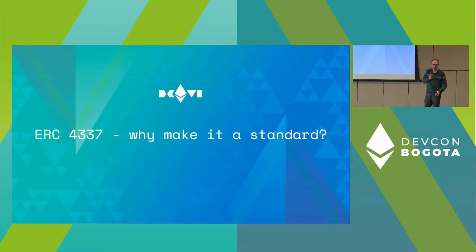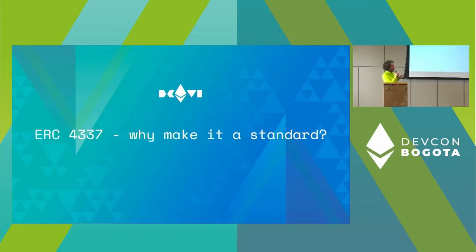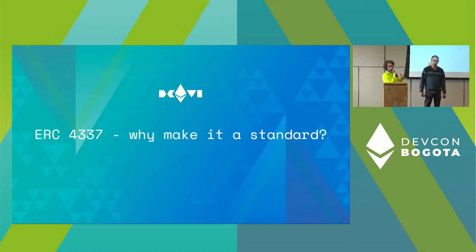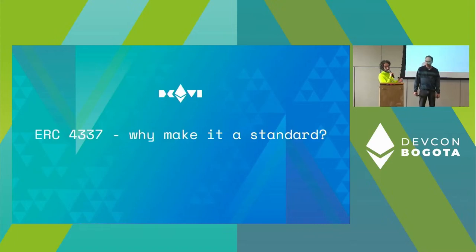These are all cool ideas. Regarding event-driven flows: if there's an NFT that mints at a certain time, you don't have to wait in front of your computer. You pre-register the transaction into a registry contract of pending transactions, and then searchers—given an incentive—execute the transaction when the time comes, competing with each other. Another use case: perform a trade in the future pending on certain conditions like price. All this becomes possible and doesn't require any trust.